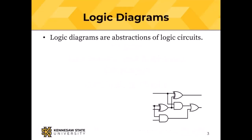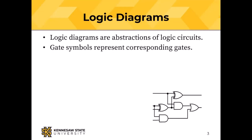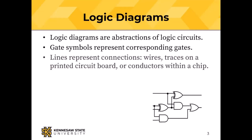Today we're going to talk about combinational circuits, and I'll define that in a moment. We're going to represent those combinational circuits with logic diagrams. Logic diagrams are yet another layer of abstraction of a logic circuit. Those gate symbols are abstractions of the transistors inside the gates, and now we mix the gate symbols with wires. Gate symbols represent the corresponding gates, and lines represent connections — wires or traces on a chip.